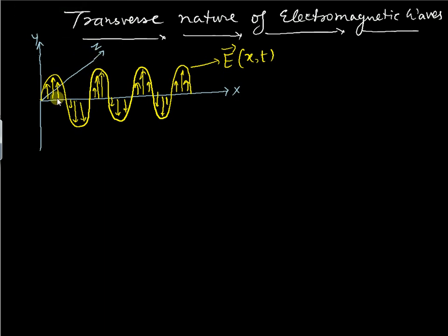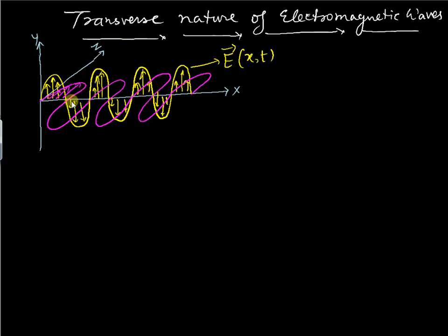The second component is the magnetic field along the z-direction. These are the magnetic field components that vibrate along the z-direction, while the electric field components are vibrating along the y-direction, and the wave is propagating along the x-axis. These are the magnetic field components.